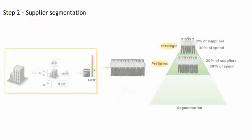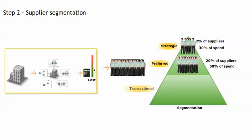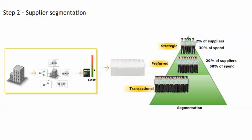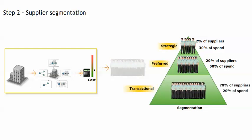So, the bottom part of the pyramid contains the transactional suppliers, which are the remaining 78% of suppliers that make up 20% of the entire spend.